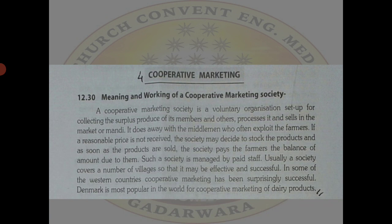Next is cooperative marketing. A cooperative marketing society is a voluntary organization set up for collection of the surplus produce of its members, which processes it and sells it in the market or mandi. Middlemen who exploit the farmers are kept away. When favorable prices are not available, the marketing society can stock the produce and sell when rates are good, then pay the farmers the balance amount plus any surplus profit.